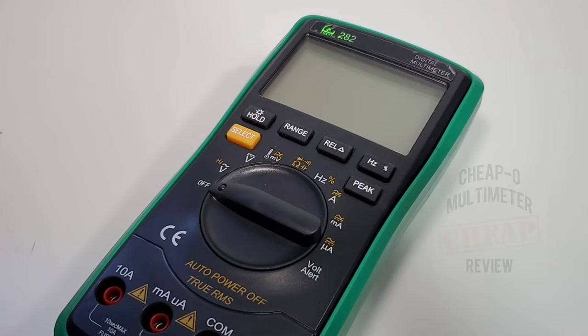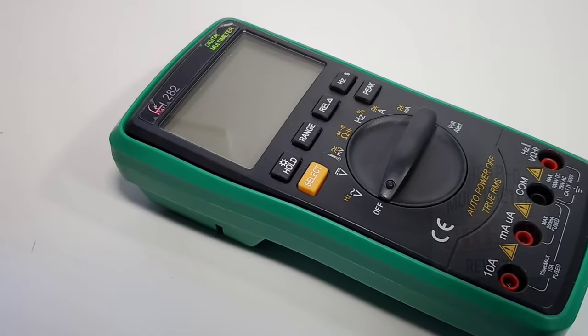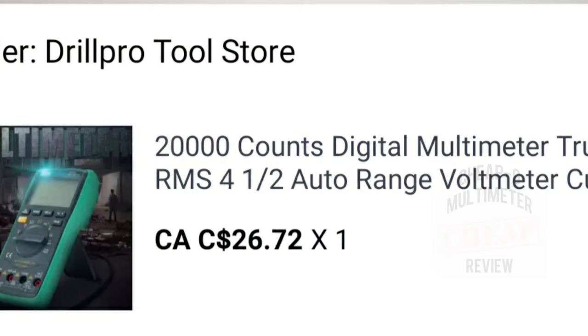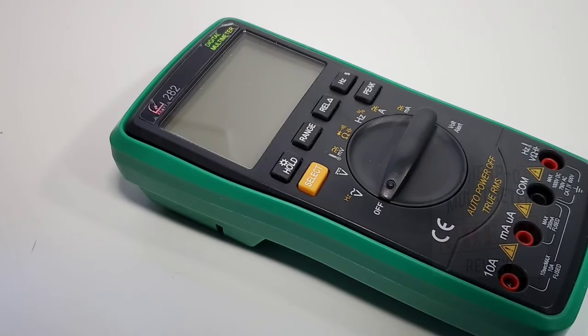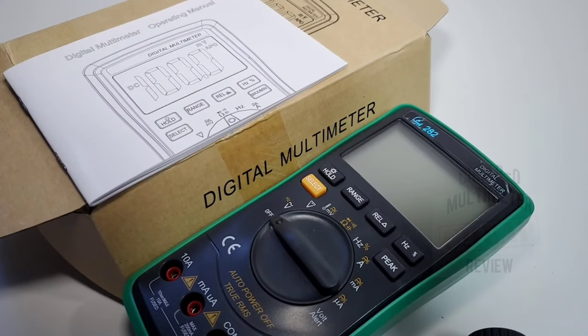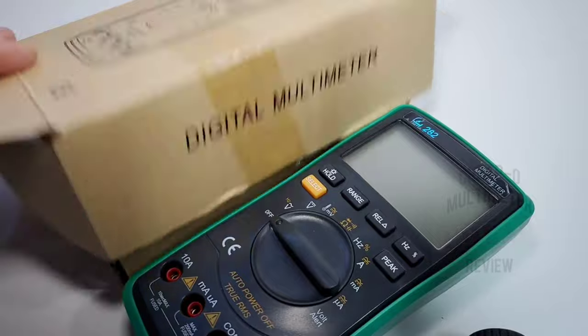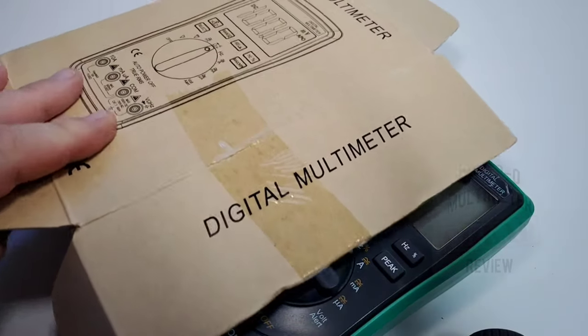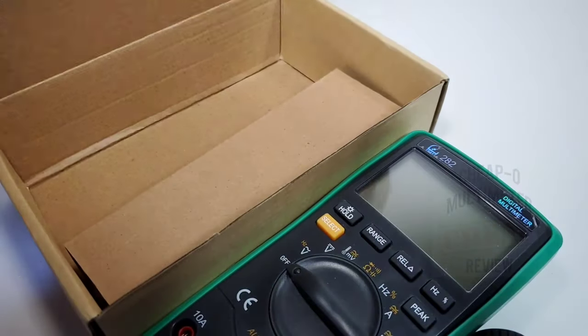Welcome back to the Cheapo Spotlight. The Zeest 282 auto-ranging digital multimeter with 20,000 counts of auto-ranging goodness. Let's take a look. Purchased on AliExpress for a whopping 20 bucks Canadian. Yeah, this is definitely in the cheapo zone.